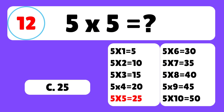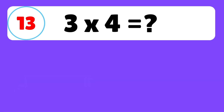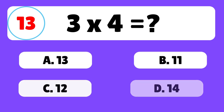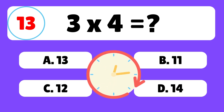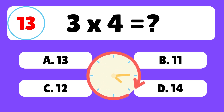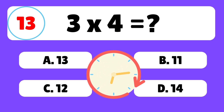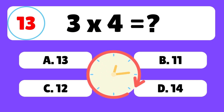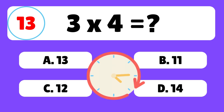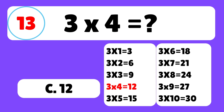Question 13. What is 3 times 4? The answer is C. 3 times 4 is equal to 12.